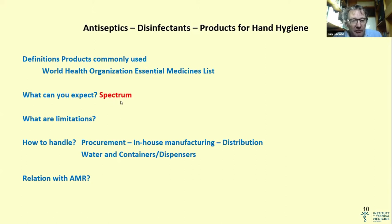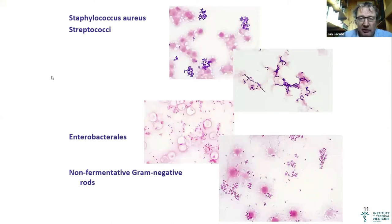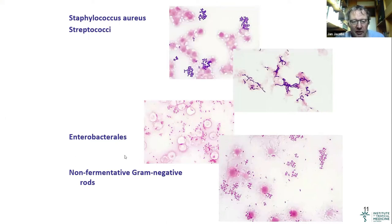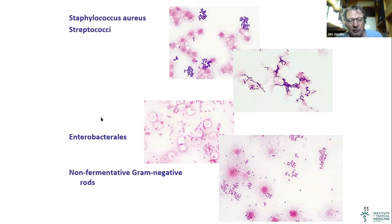What about the spectrum? Two days ago we discussed gram-positive cocci — small cocci, staphylococcus, longer-chain streptococci — the Enterobacteriales, including Salmonella, and the non-fermentative gram-negative rods. These are the bacteria. Think about water in relation to Pseudomonas, think about Acinetobacter in dry environments, and think about Enterobacteriales in patient colonization.